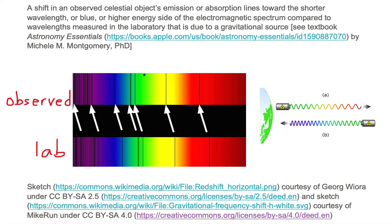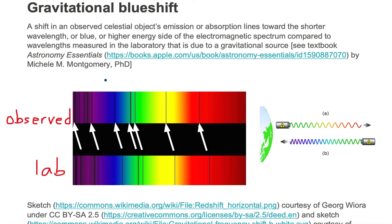The observed spectrum is shifted to the left compared to the laboratory spectrum. This shift to the left is towards the blue side of the spectrum, not towards the red side, so we call this shift a blueshift.